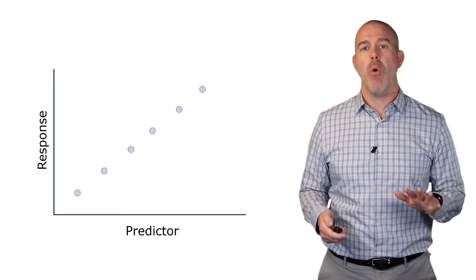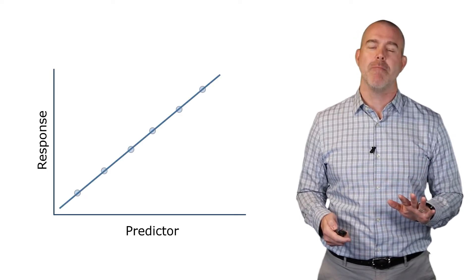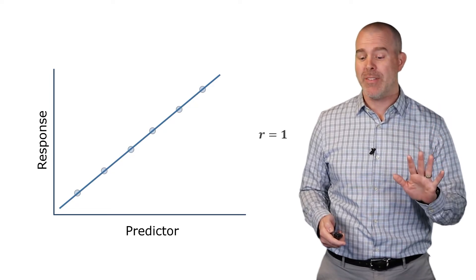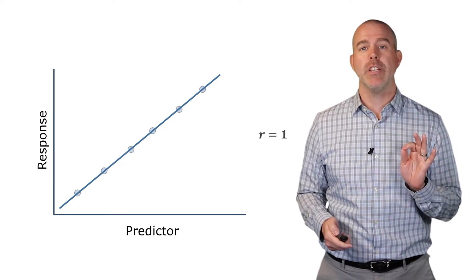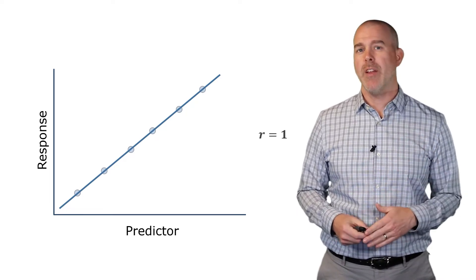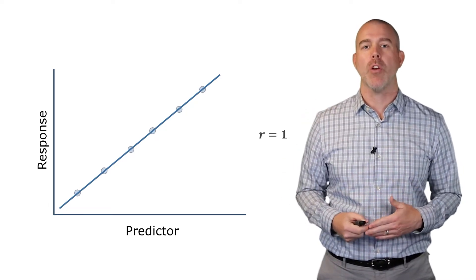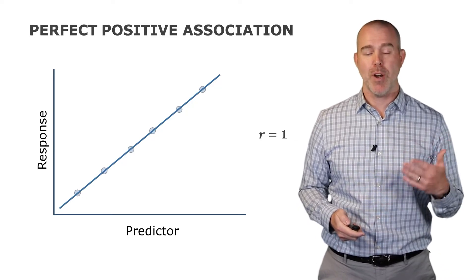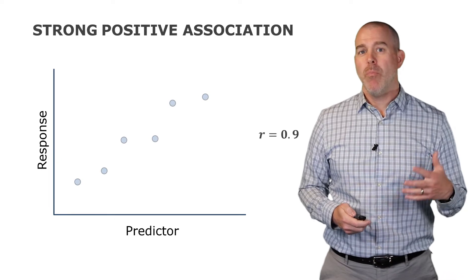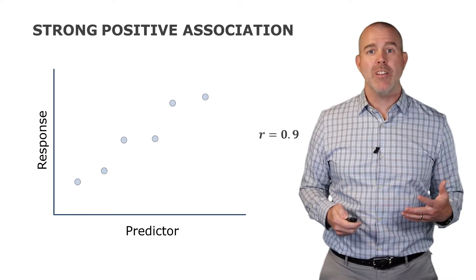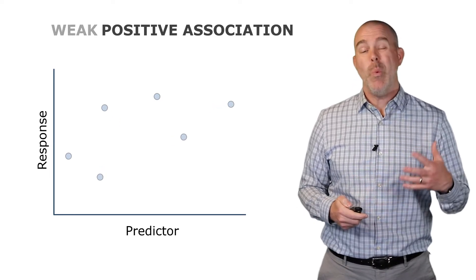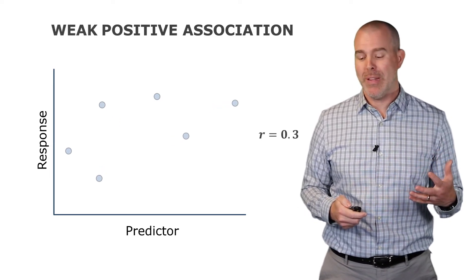Let's talk about some of these correlations. Suppose we have five points perfectly in a line — that's a perfect positive linear correlation. That correlation is one. We use the letter R to represent this statistic, and if they're perfectly in line like that, the correlation is one — a perfect positive association. If we spread it out a little bit, it might be R of 0.9. Spread it out a little bit more, it's moderately positive. A weak positive relationship, maybe about 0.3.